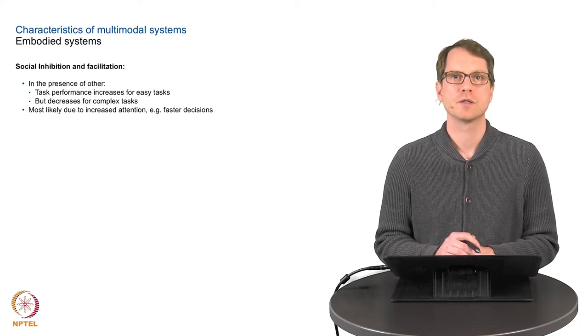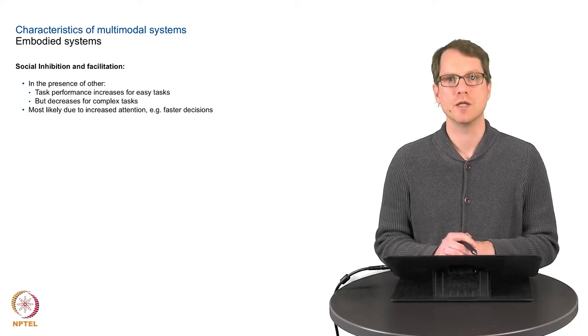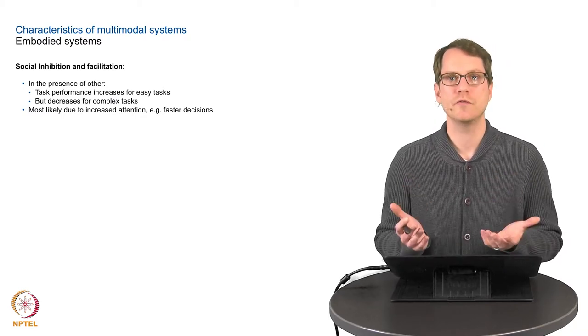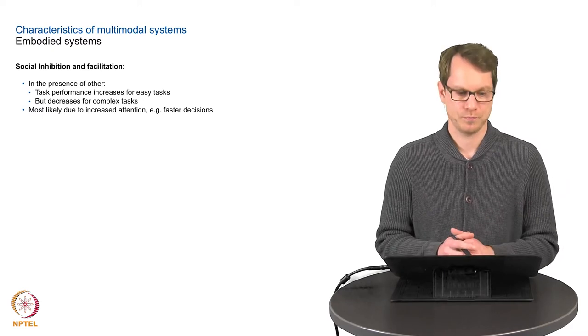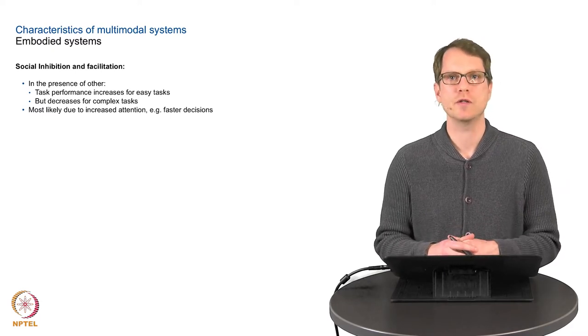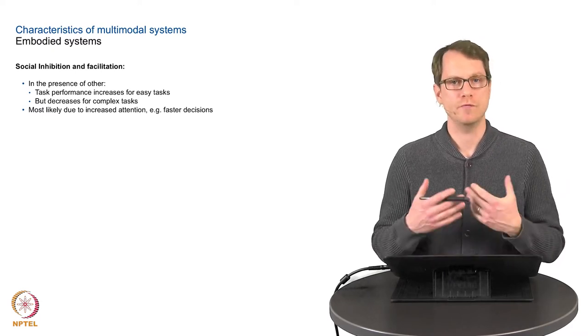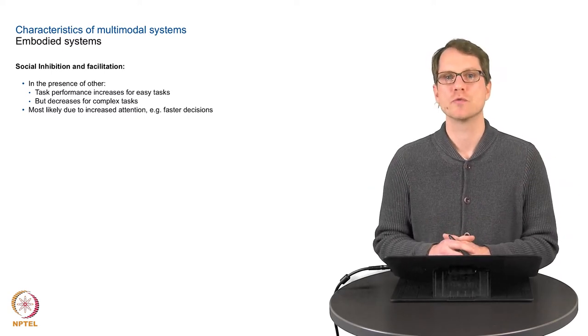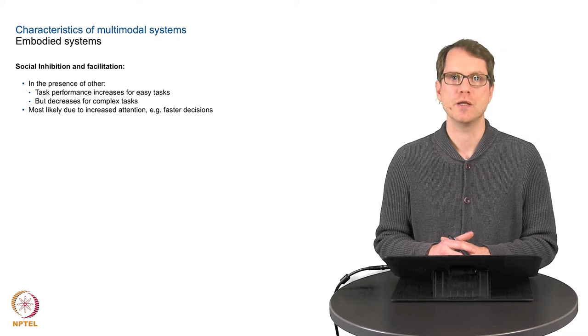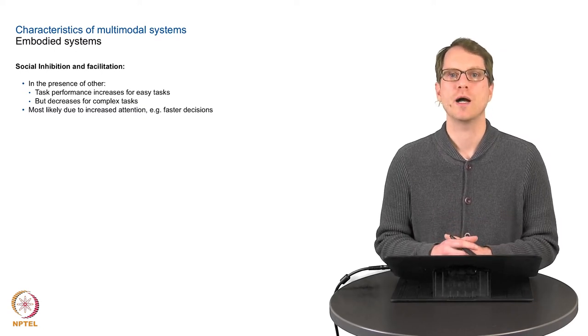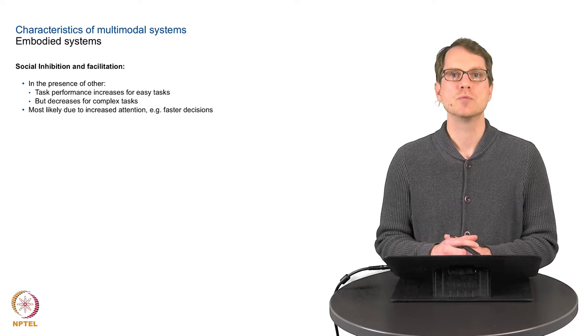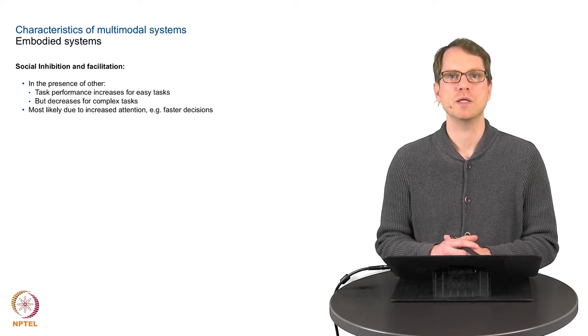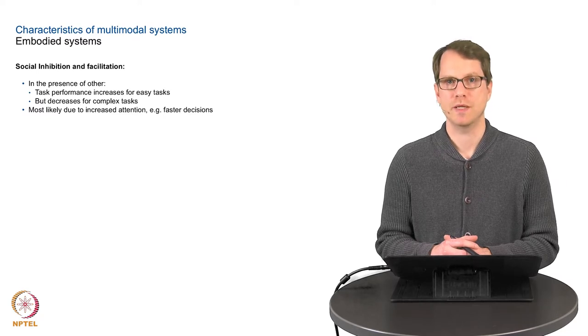The third effect is the so-called social inhibition and facilitation effect. These are actually two effects which come together. This is not an effect from human-computer interaction—we know this from social interactions between humans. It means in the presence of other people we tend to be better at simple tasks